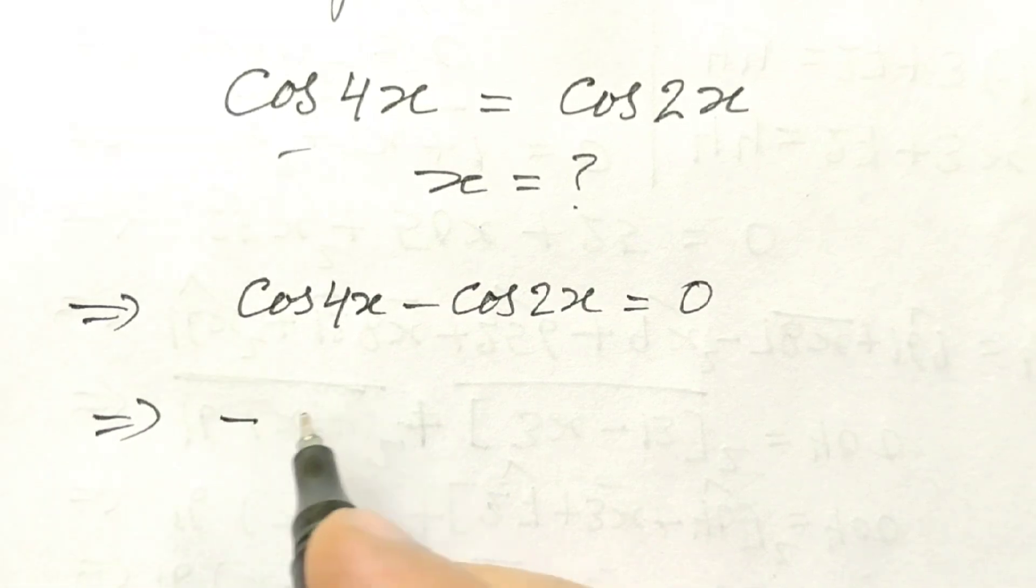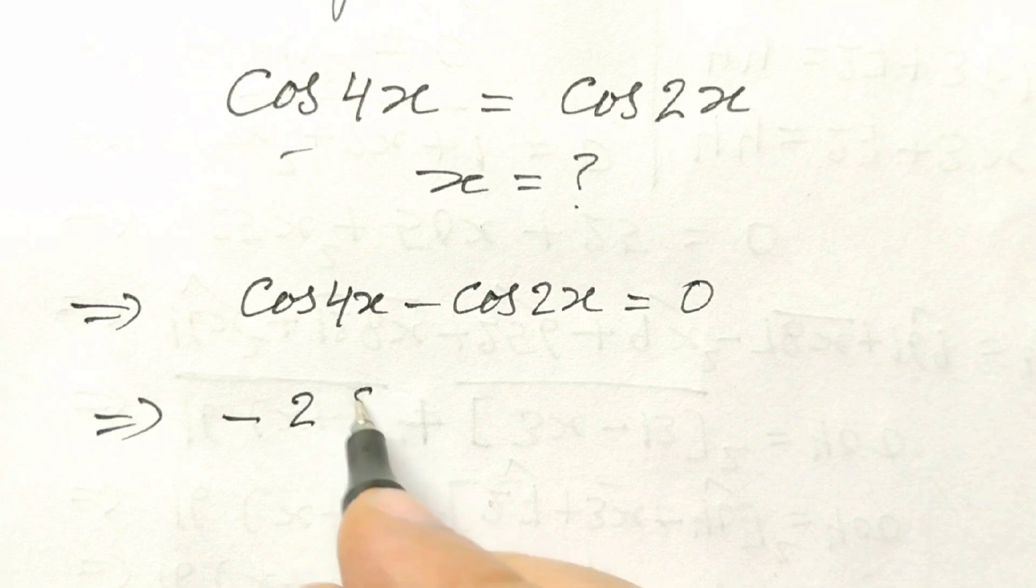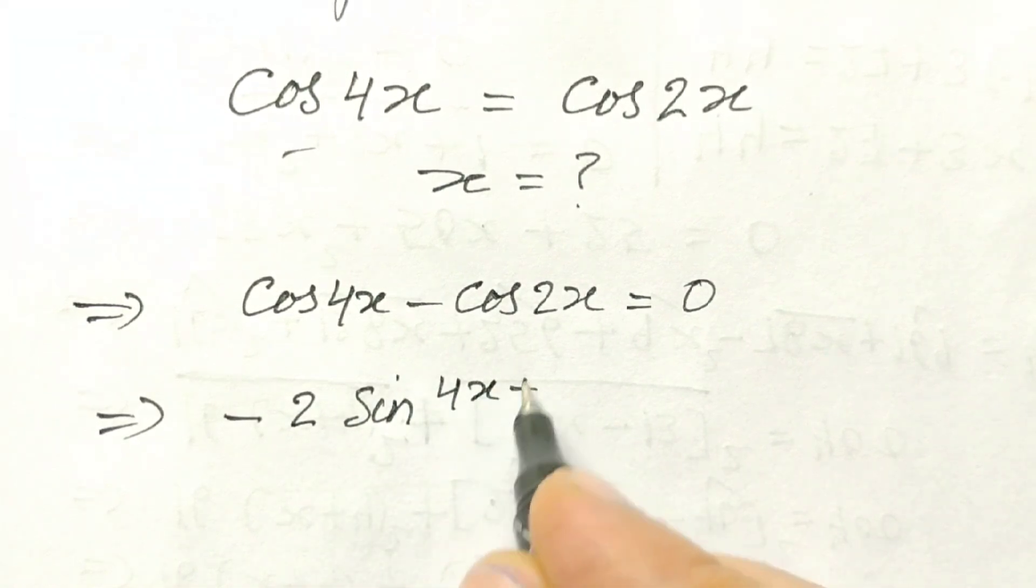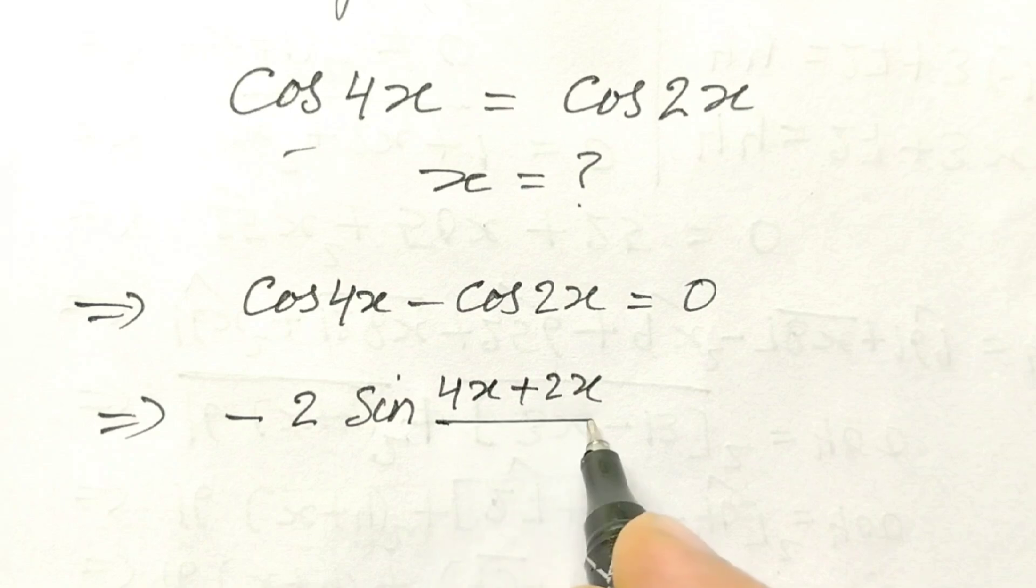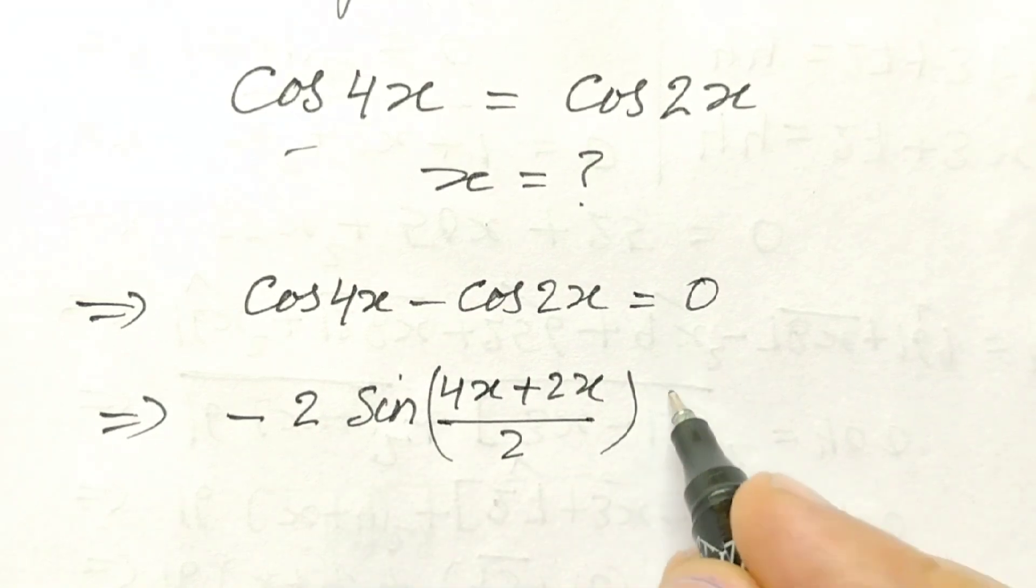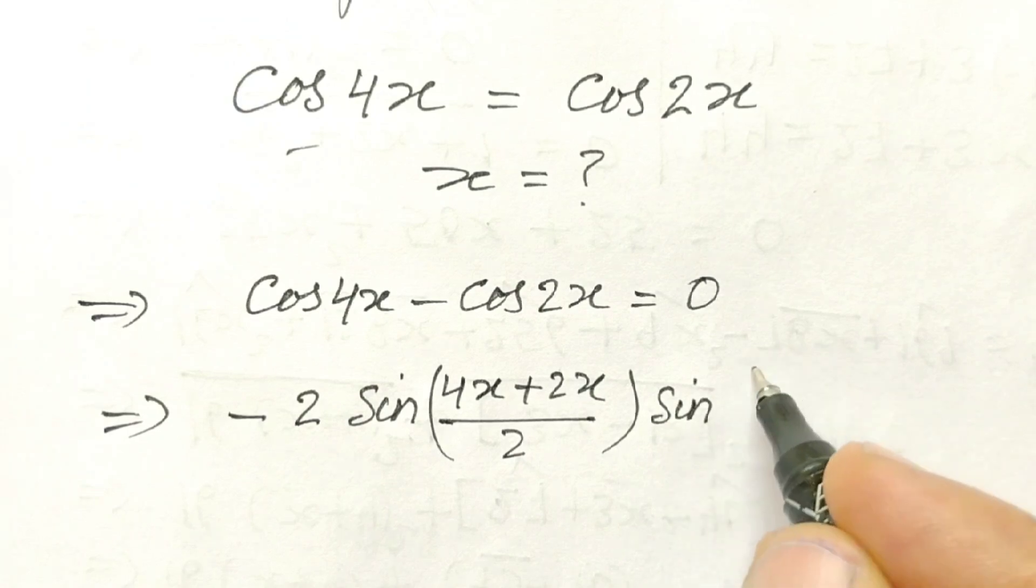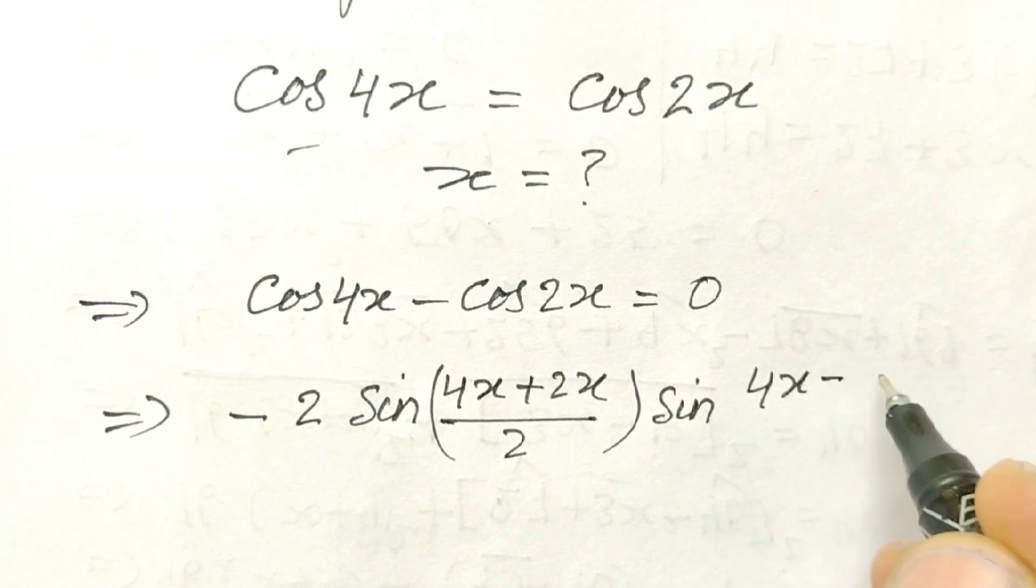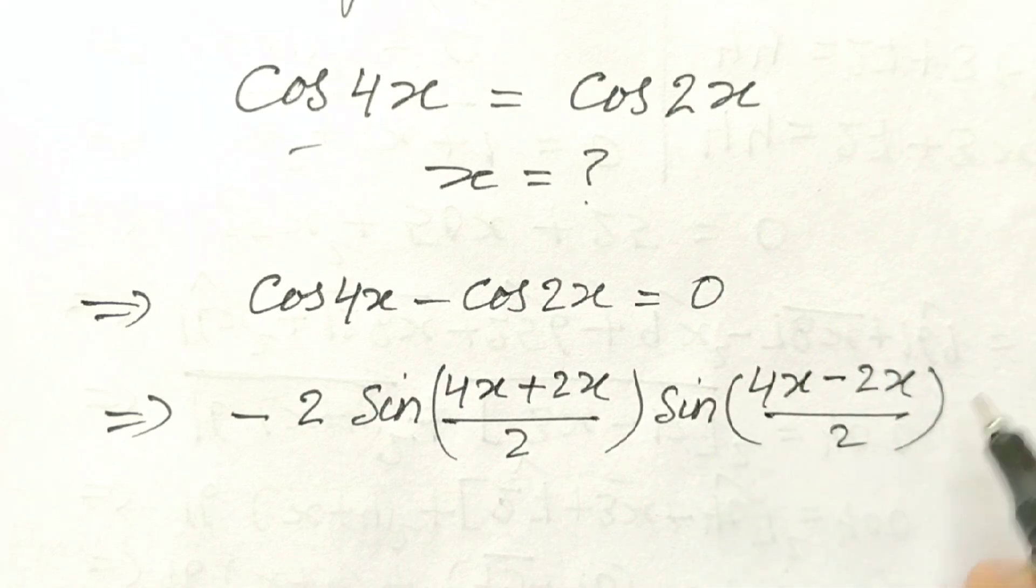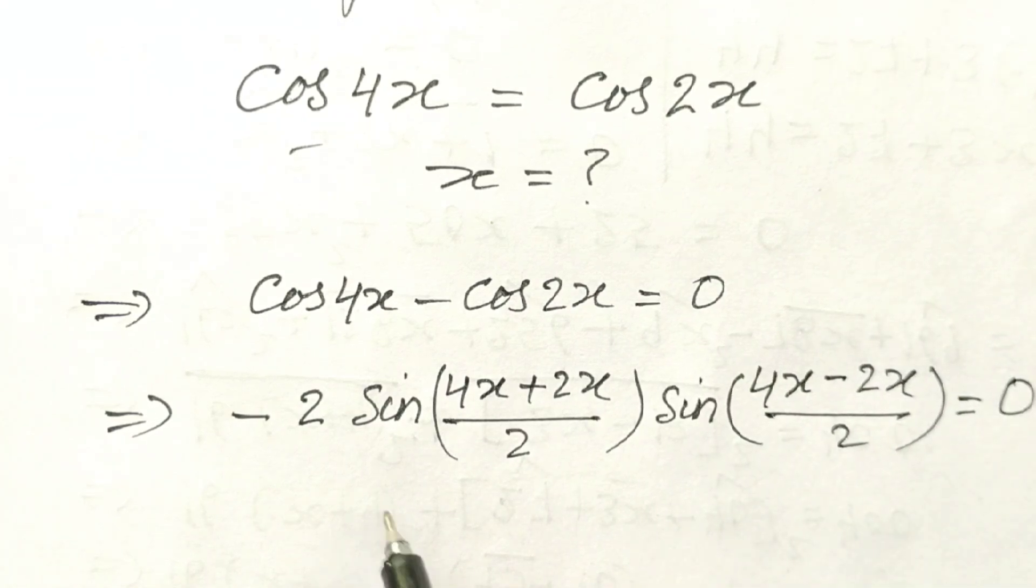So, this will be minus 2 sin, 4x plus 2x over 2, sin 4x minus 2x over 2, is equal to 0.